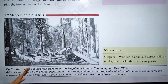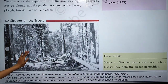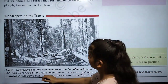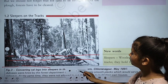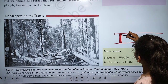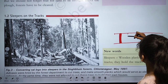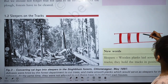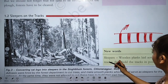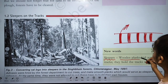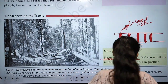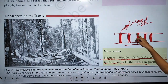Forests were also cleared to make railway sleepers — the wooden planks laid across railway tracks to hold them in position. Earlier, these sleepers were made of wood, though nowadays cement is used. The need for sleepers led to large-scale tree felling.